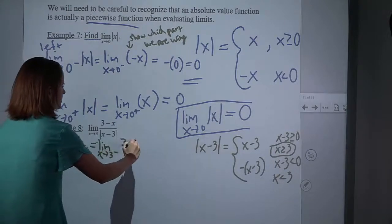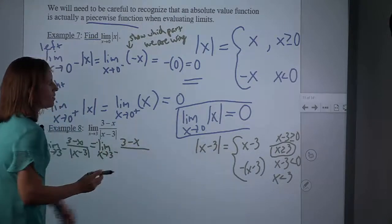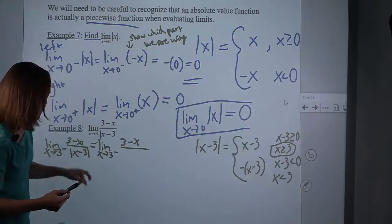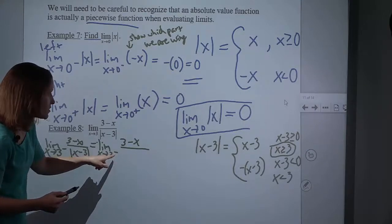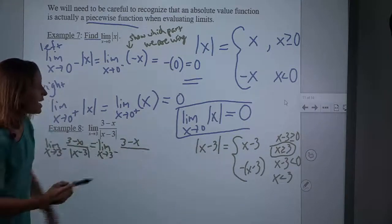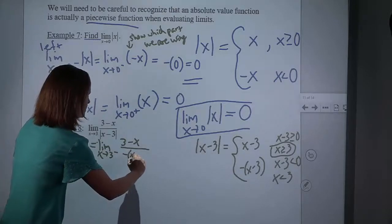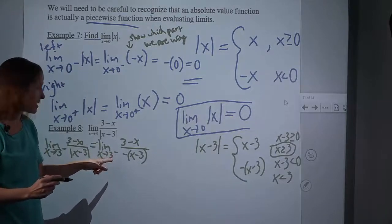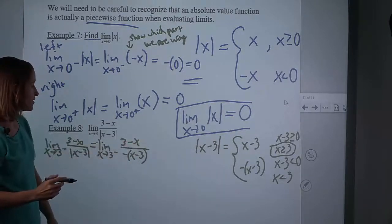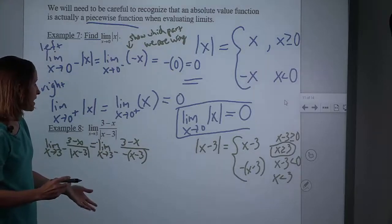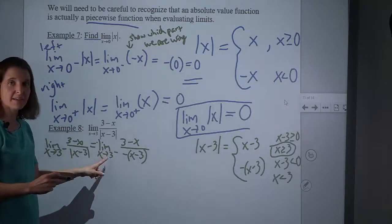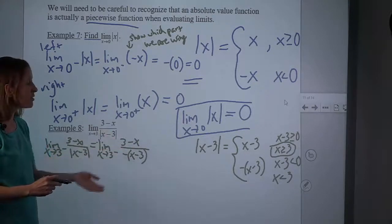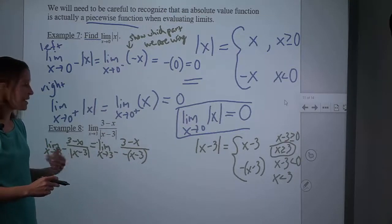So if we want to do the limit as x approaches 3 from the left, the 3 minus x part isn't affected, but for the absolute value we have to decide which piece we're using. We are coming from the left of 3, which means we are less than 3, and so we're actually using the bottom piece — the negative notation told me to use that piece of the function. If I tried to plug in right now, I'd get 3 minus 3, which is 0, over negative 3 minus 3, which is negative 0. I'd get 0 over 0, which is indeterminate. So I can't plug in yet — I need to do some simplifying first.